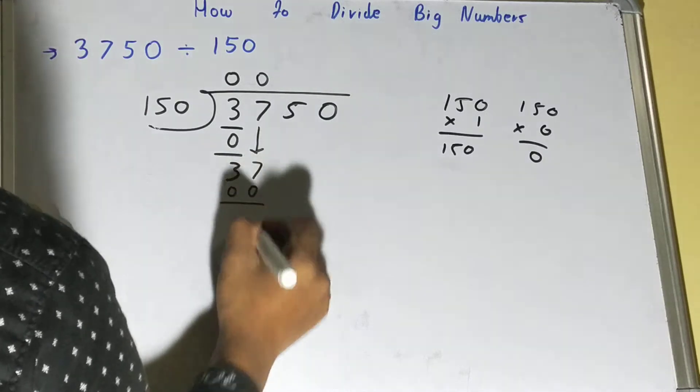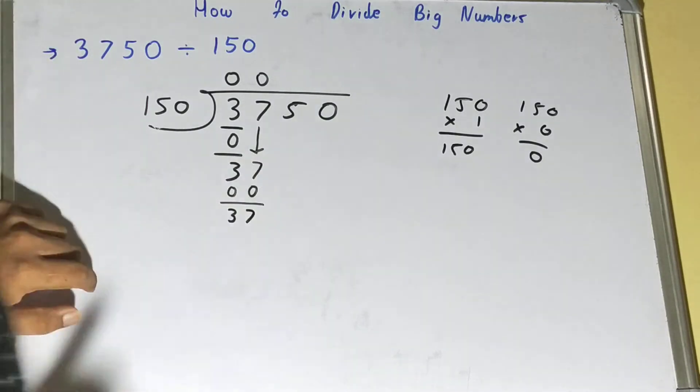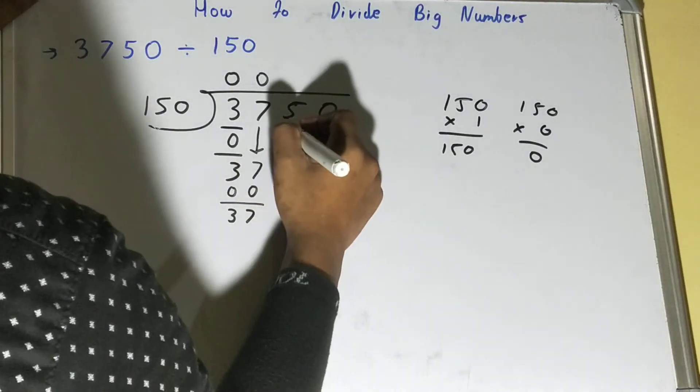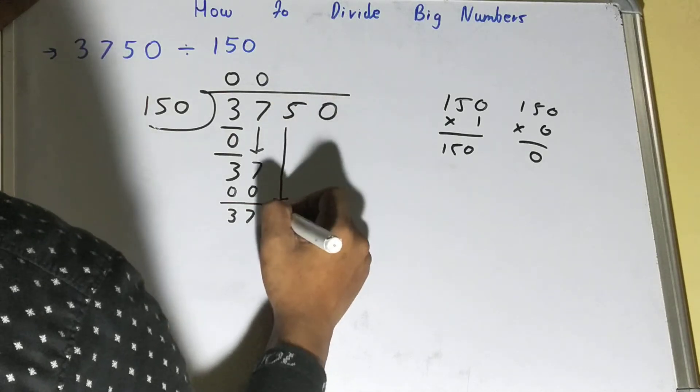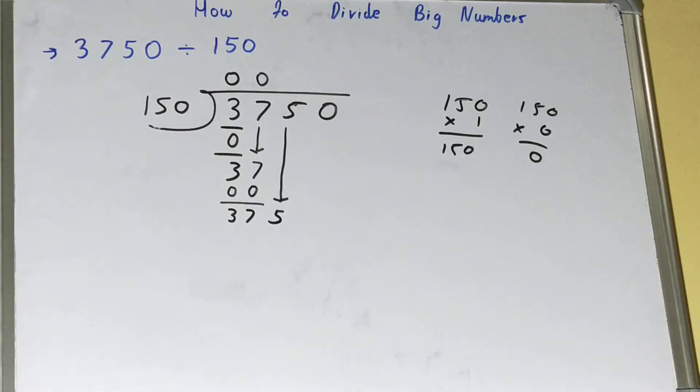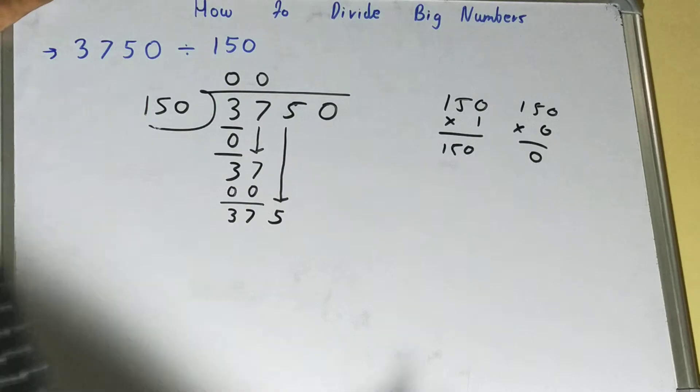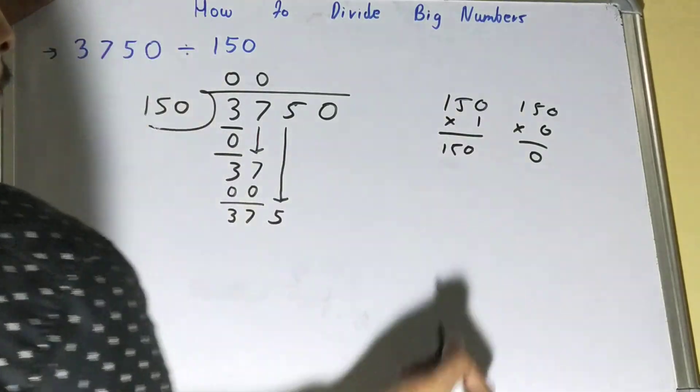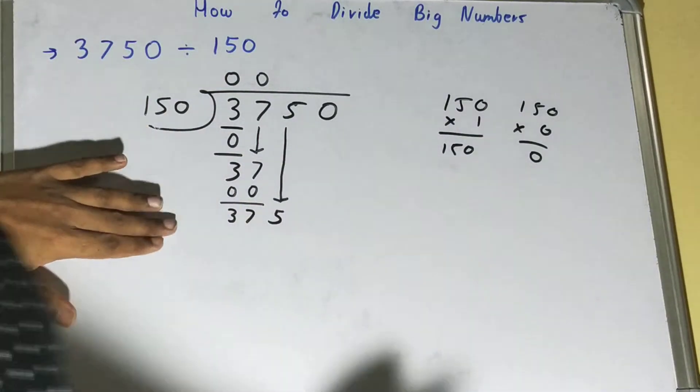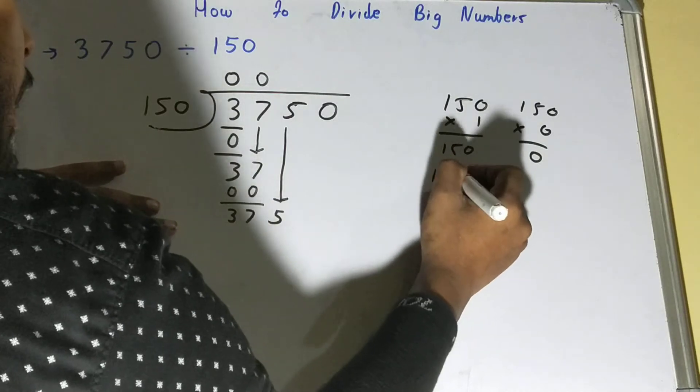Now you'll bring the next digit down, that is your 5. Now the main work comes - now you have got a number that is bigger than 150. So you will multiply 150 by something that is less than 375.